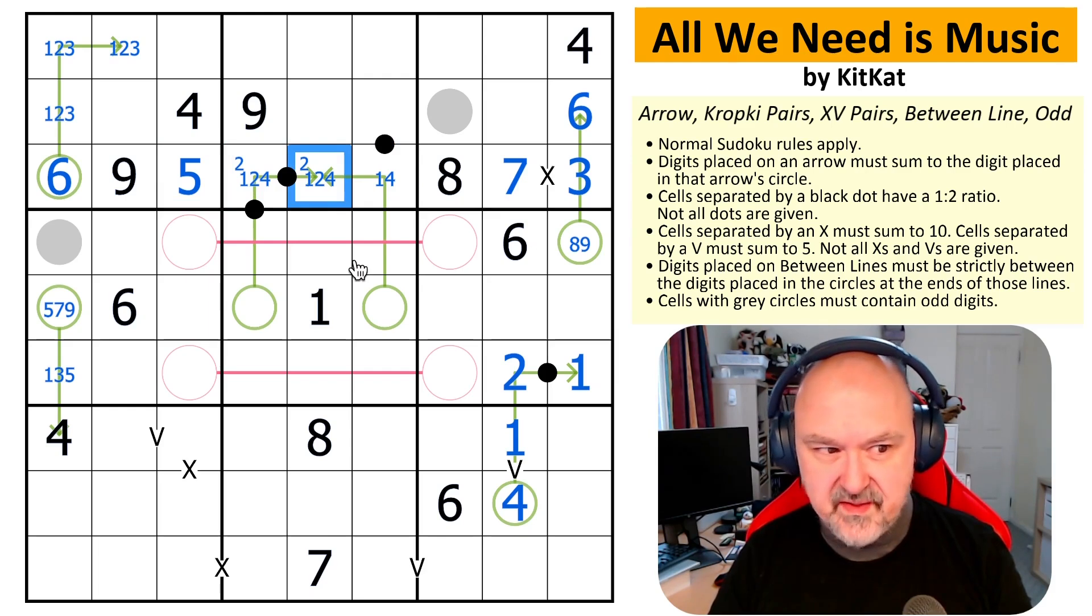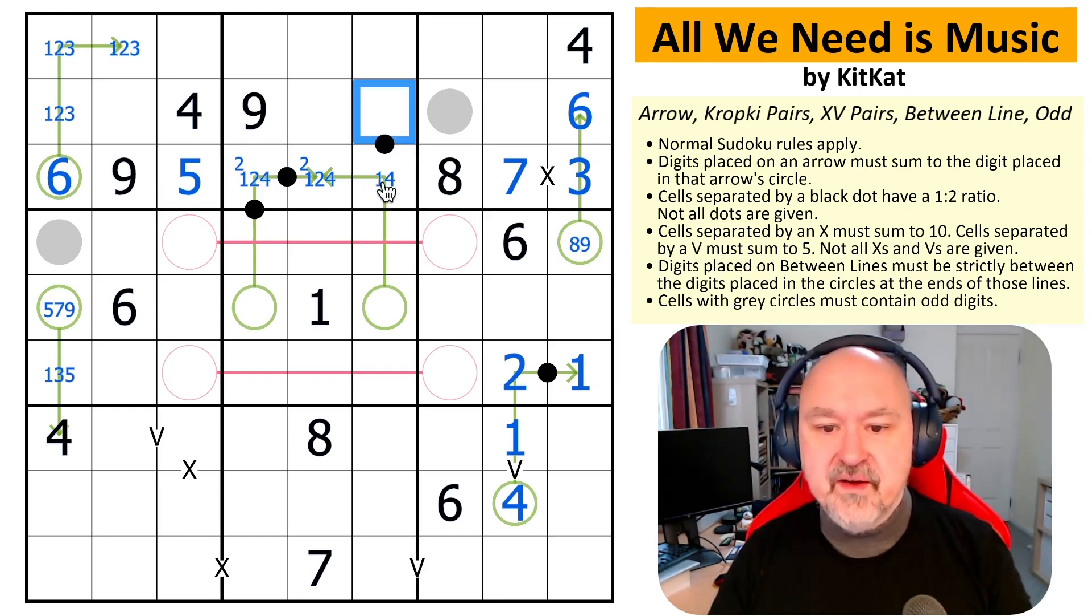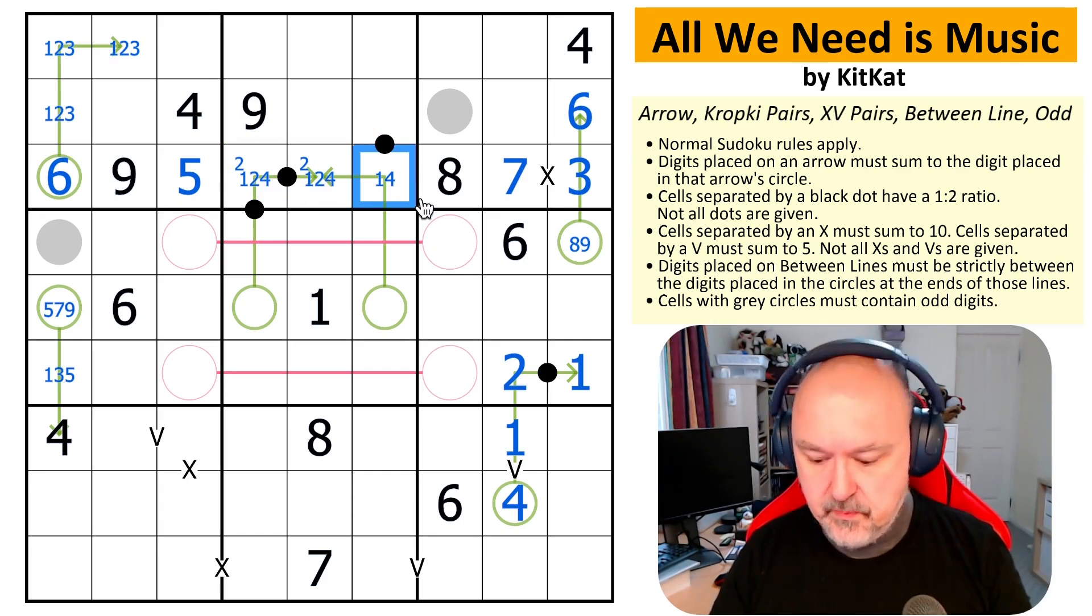Now, odds are that's going to be the 1, isn't it? Actually, no. Well, maybe. Okay, 1 would have to go with 2, but 2 has to be here in the box. So this has to be 4, this has to be 8. 4 comes out of here. This is a 1, 2 pair.